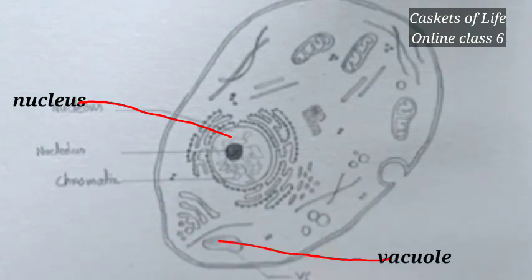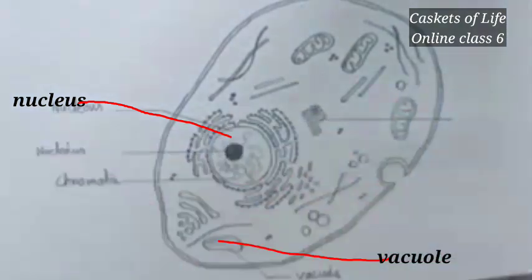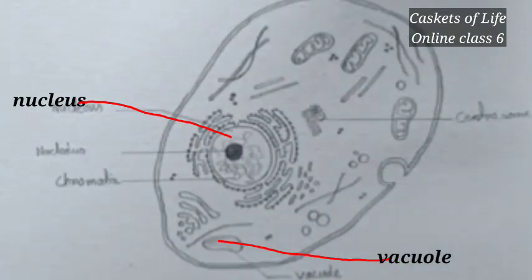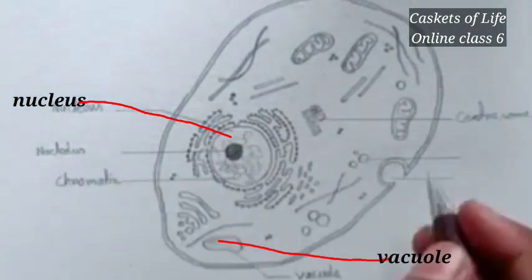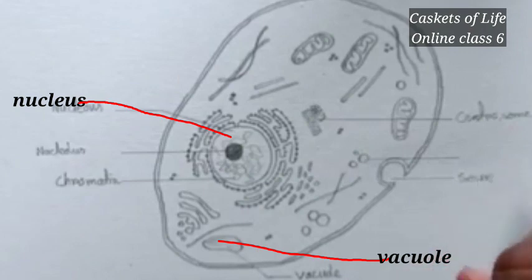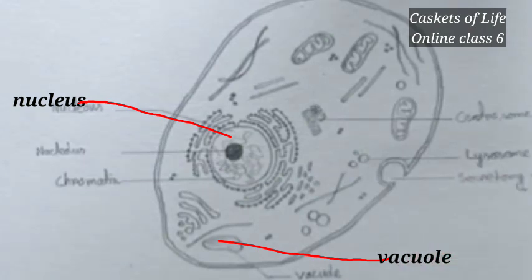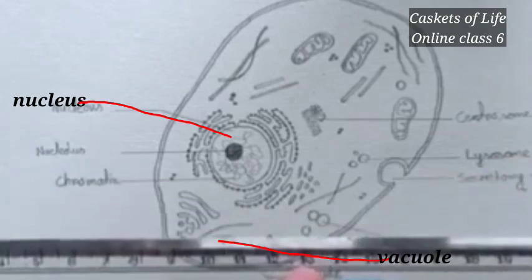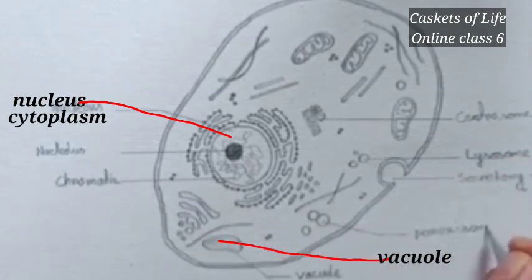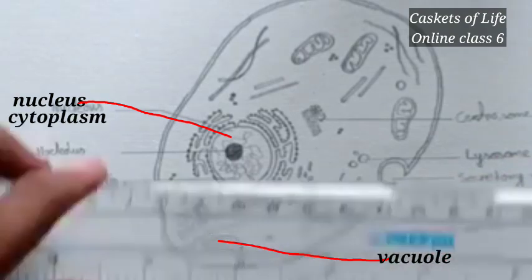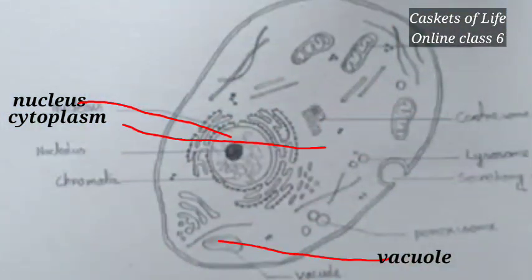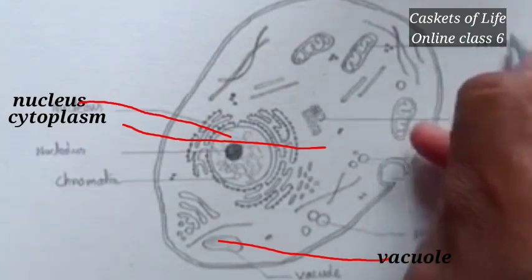We have vacuoles. Now we have to mark cytoplasm and cell membrane. This is the cytoplasm. The cell membrane is the cell membrane. I have four parts of this.